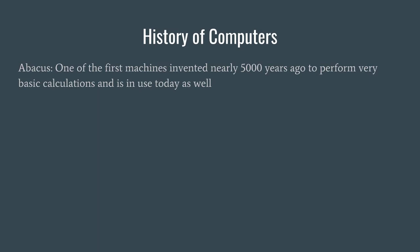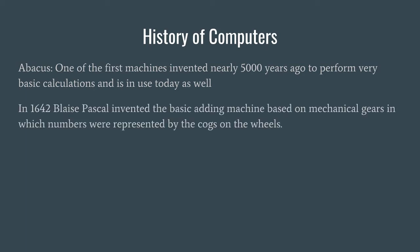After the Abacus was invented, Blaise Pascal in 1642 invented the basic adding machine, which was based on a few mechanical gears. In this machine, the numbers were represented by cogs on the wheels. This was basically a mechanical machine and was to be operated manually with hands. Hence it was not so efficient, but was quite an invention at that point of time.